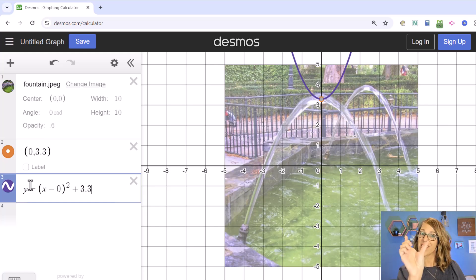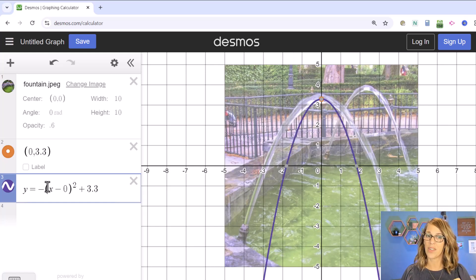Now I see that the direction of my parabola is wrong. I need to reflect that down. So I'm going to put a negative sign out in front. So there's the direction part. We also need to flatten this so that lead coefficient right now of negative one is actually too big.